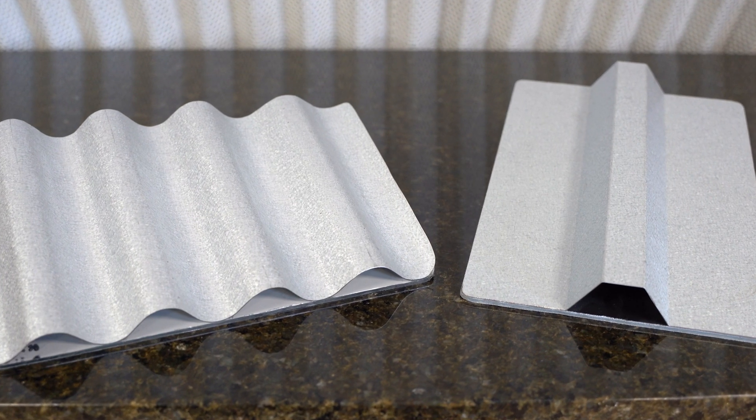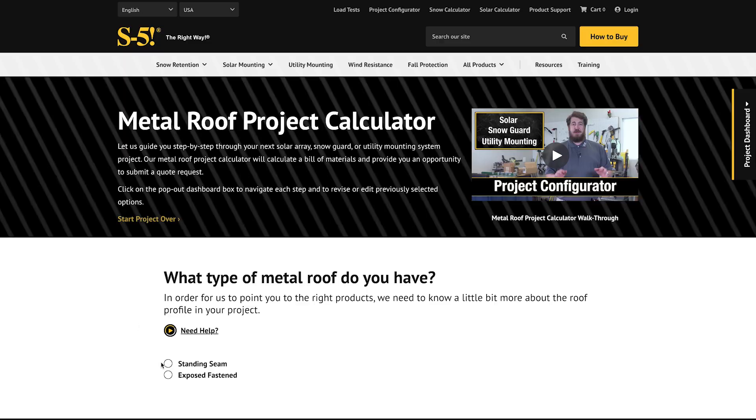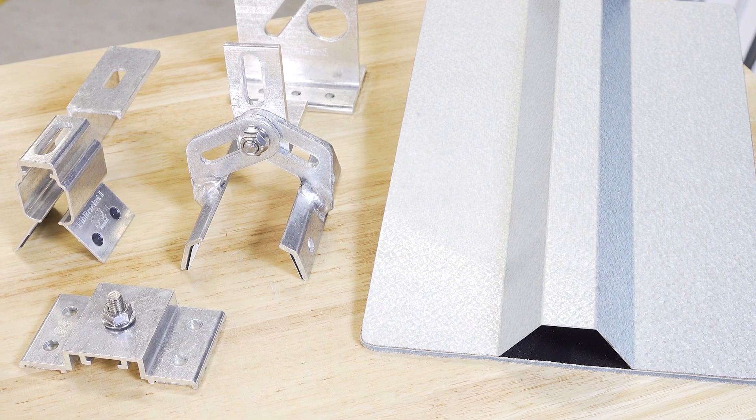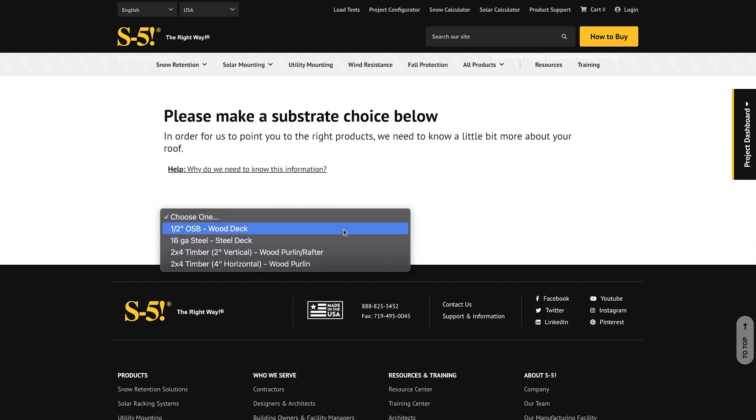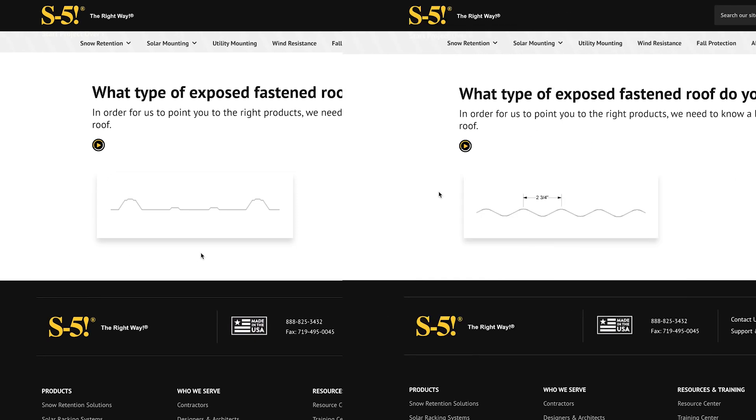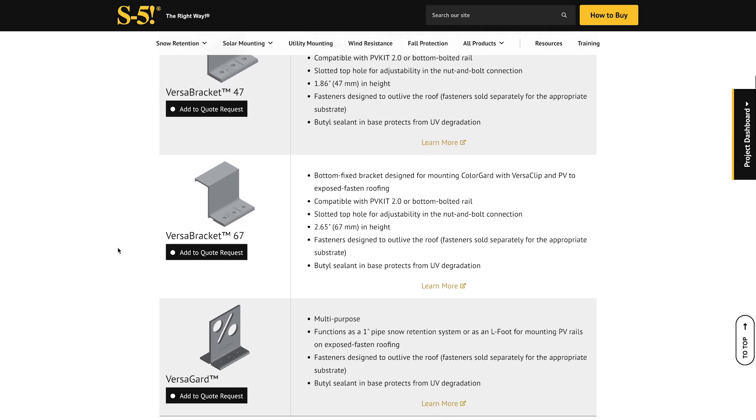Now, if you have an exposed fasten roof, we'll take you through the Project Configurator process to find the right bracket. First, choose either corrugated or trapezoidal, then specify your substrate. If your roof resembles one of the diagrams on the following page, just click on the appropriate image to see the brackets available to you.